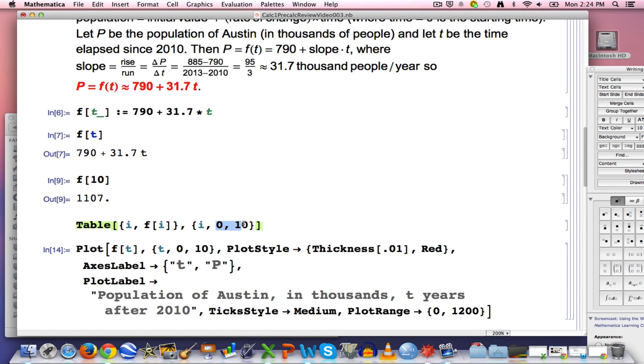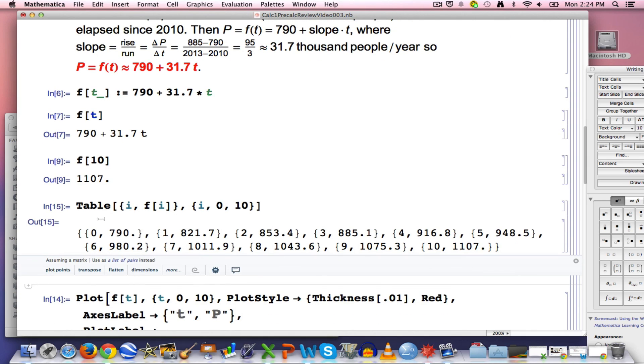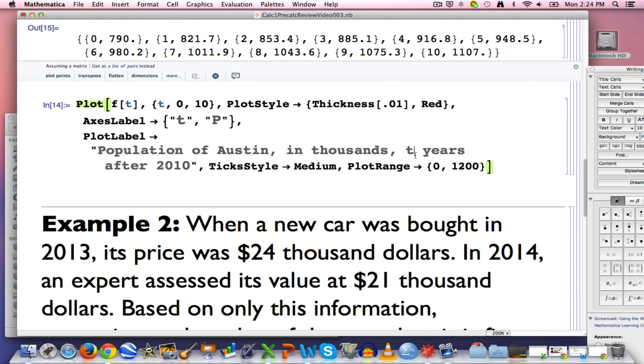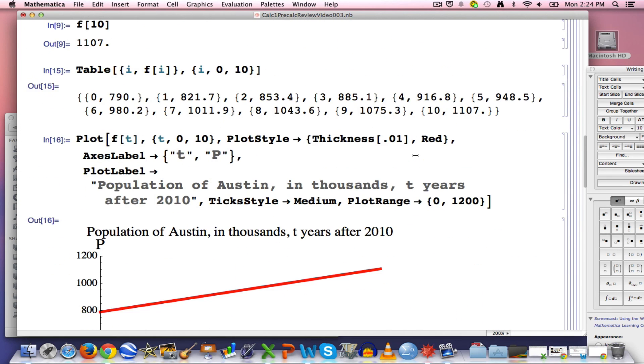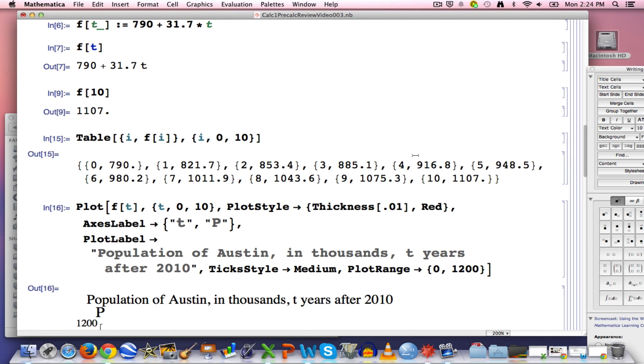This is going to create a list of 10, actually 11 points. The points I comma f of I, as I goes from 0 to 10 in units of one step at a time. 0, 1, 2, 3, etc. There they are. The first point, if you will, is 0 comma 790. The second one is 1 comma 821.7, etc. The eleventh one, at time equals 10, was 10 comma 1107. So, these are the points that you would end up plotting if you were going to plot this graph that we had by hand. In the next video, I think I'll show you a way to actually do that in Mathematica with something called list plot.